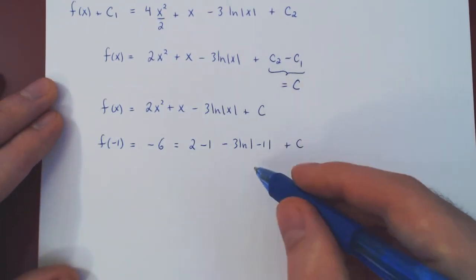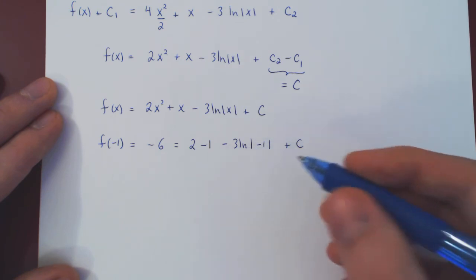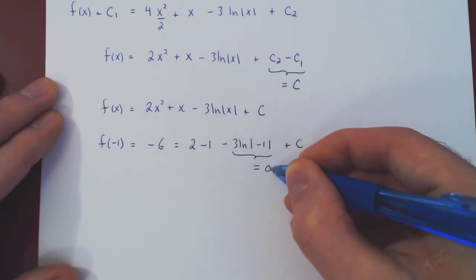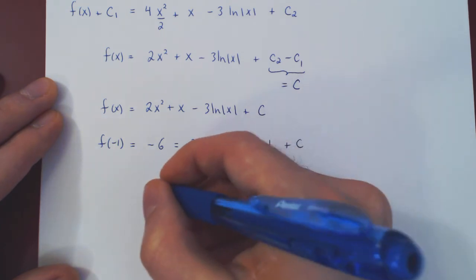But this is the ln of 1, and the ln of 1 is 0. So we get 3 times 0, which is 0.